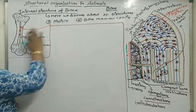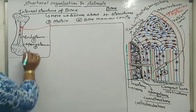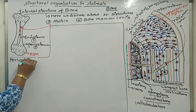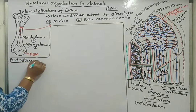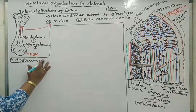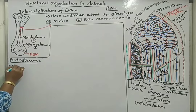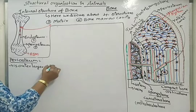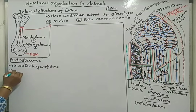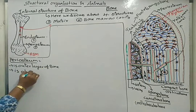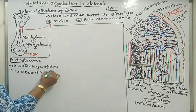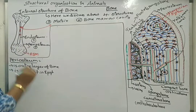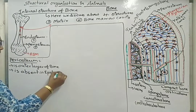The internal structure has a few important labellings. The first one is periosteum. Periosteum is the outer layer or outer covering of bone. However, periosteum is absent in the epiphysis region — the region where red bone marrow is present.